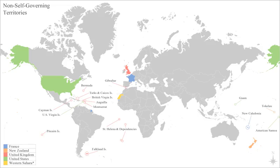Alaska was a colony of Russia from the middle 18th century until sold to the United States in 1867, becoming the 49th American state in 1959. Angola has been a colony of Portugal since the 16th century, independent since 1975. Argentina gained its independence from Spain in 1810. Australia was formed as an independent country in 1901 from a federation of six distinct British colonies, founded between 1788 and 1829.